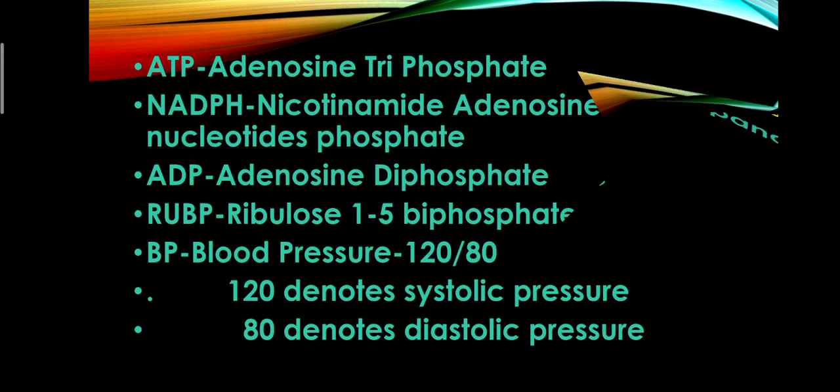First of all, ATP. The full form of ATP is adenosine triphosphate. The adenosine binds with three phosphate molecules, that is why it is called adenosine triphosphate. Already we have learnt that the energy released in respiration is stored in the mitochondria in the form of ATP. That means, energy is stored in phosphate molecules.